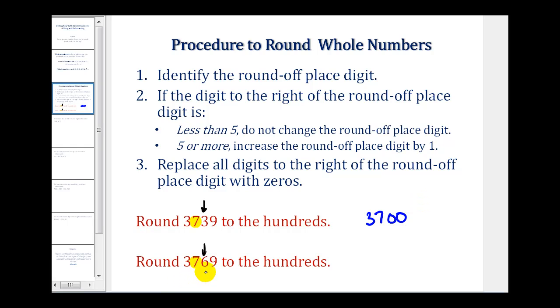However, on the second example, the digit to the right is a six, which means round up. So we change this seven to an eight. And then the digits to the right will be zeros. So this would round to 3800.